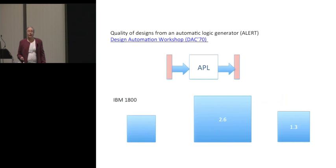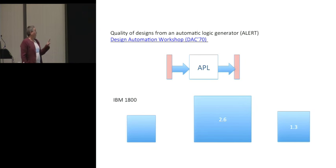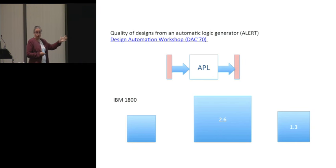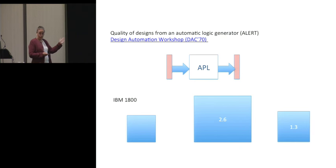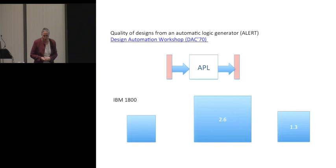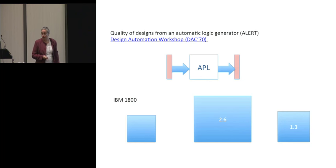In 1970, they published a paper where they compared the results of a hand design of the IBM 1800 versus circuits generated from their hardware synthesis system. They discovered that the generated circuits were 2.6 times larger than the hand-designed circuits, but then they studied their synthesis methods and decided that with more time and resources they'd be able to get it down to 1.3 times larger. This was considered a good result — APL is good for hardware generation.